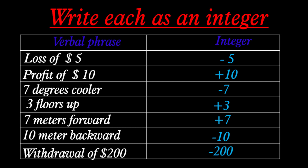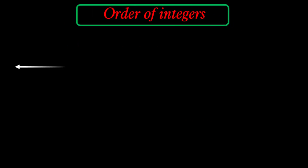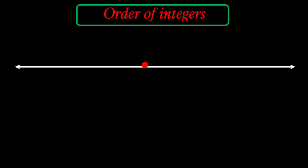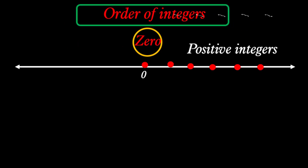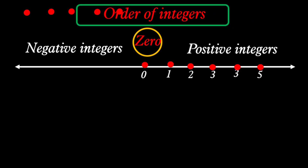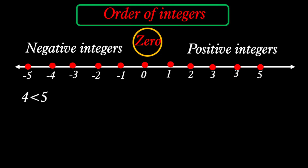Ten meters backward means negative 10. A withdrawal of 200 dollars means negative 200.